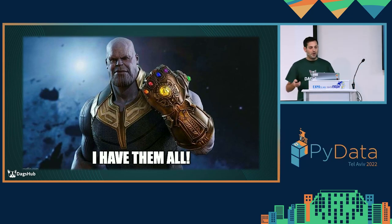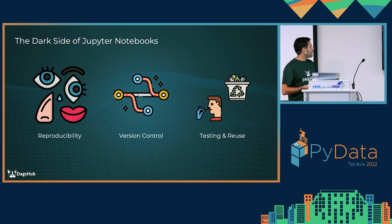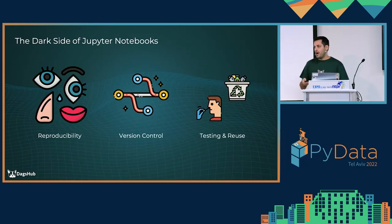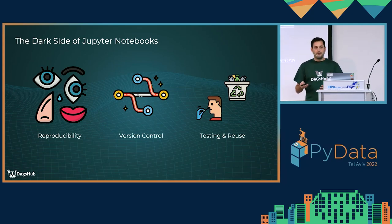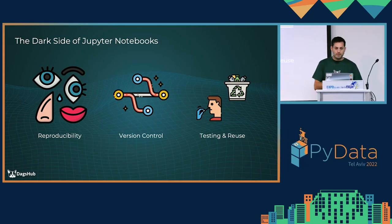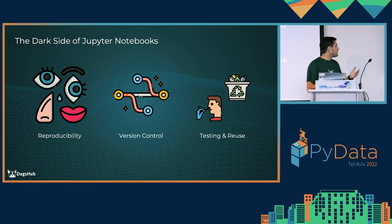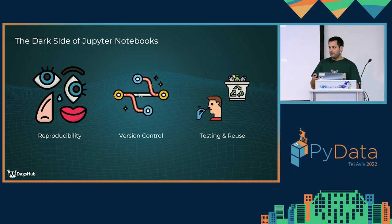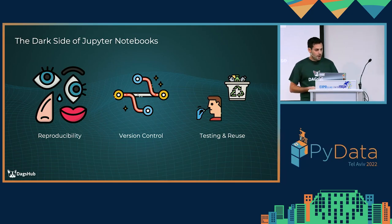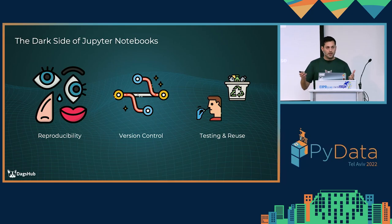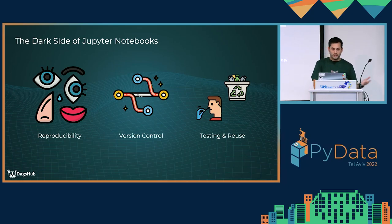With notebooks, we can run out-of-order cells and edit them after we've already run them — this is a huge disadvantage for reproducibility and requires a lot of effort tracking the kernel state when executing. Also, behind the scenes, Jupyter notebooks are basically a very large JSON file, which makes it very hard to diff, track, or version with Git.